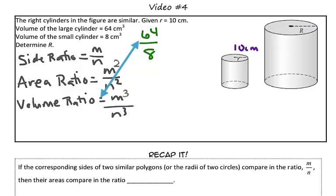Well, what we're trying to solve for is a side length or a radius. Since we need the radius, we need to go from our volume ratio to our side ratio. Well, to undo something that is cubed, we need to take the cubed root of each value.